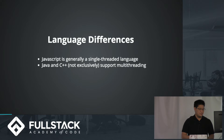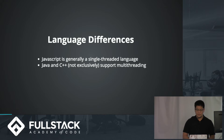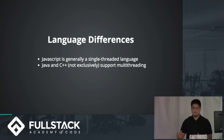And with Java and C++, but not exclusively these languages, they support multi-threading in more of a hardware sense. So they're able to actively use multiple cores on a CPU to do simultaneous tasks, so we get multi-threading that way.